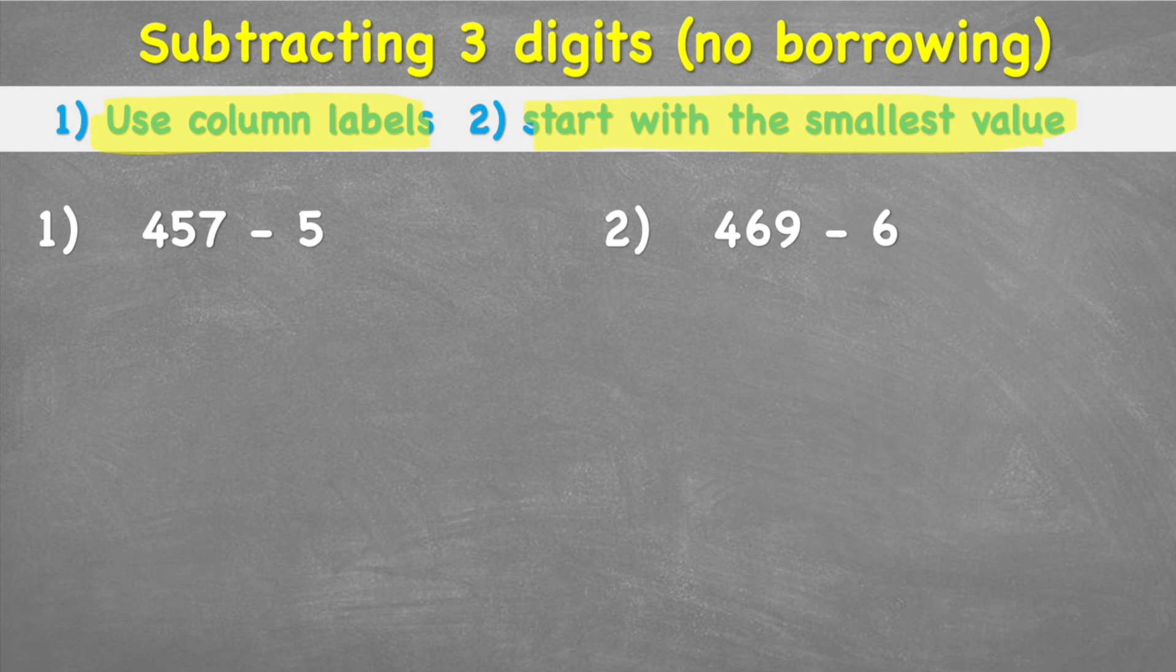Before we start, let's label our numbers so we understand what place value they have, so that makes it easier to put them in the columns. Let's first look at 457. Well, 457 is made up of seven ones, so we can put this little O above the seven, five tens and four hundreds. Hopefully you've seen a number shown like that before with our ones, tens and hundreds over the top.